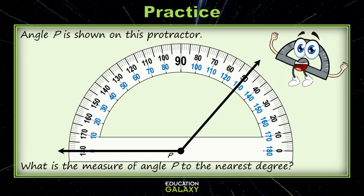Step two, determine whether the reading is on the inside scale or the outside scale. The ray is pointing to the left and the scale that starts at the left is the inside scale. So that means I'm looking at the inside reading. Step three, read the measurement. It's pointing right at 130 degrees. So our answer is 130 degrees.